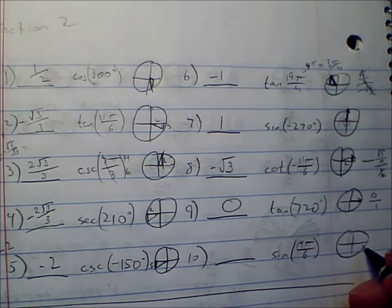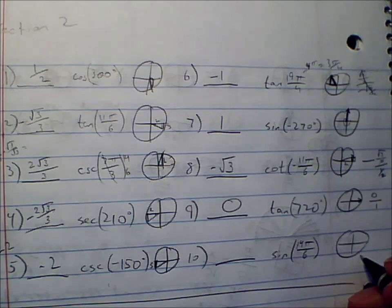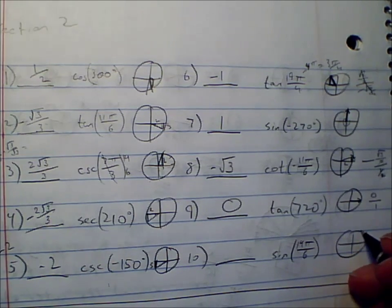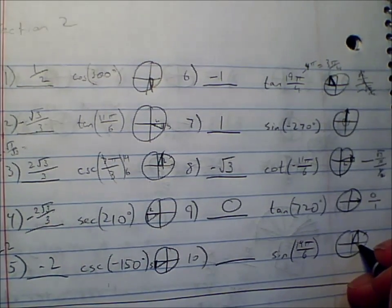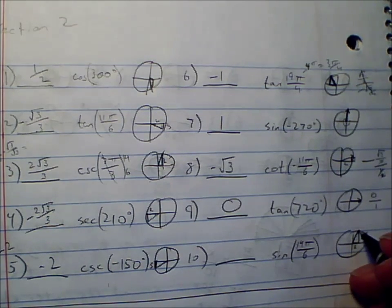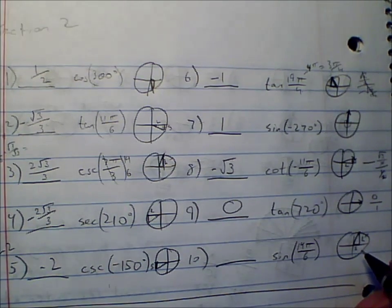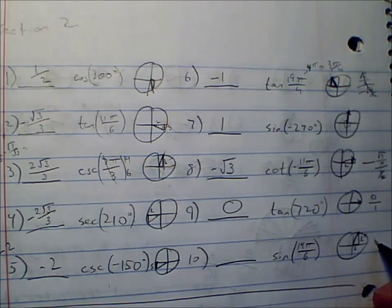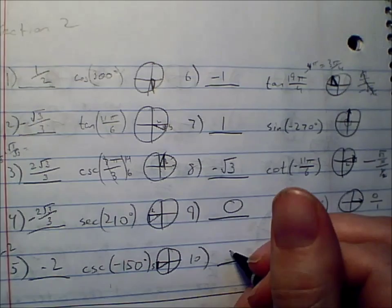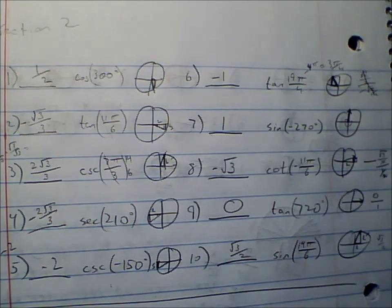Number 10. Sine of 14π over 6. We already graphed 14π over 6 once. There's 12π over 6 and then count 2 sixths over. 14π over 6 would be right there, connected to the x-axis to make a triangle. We have a short and a long side because it's a 30-60-90 triangle. Sine is the y value, which here would be the long side, which is square root of 3 over 2. That's all sine is - just the y value.